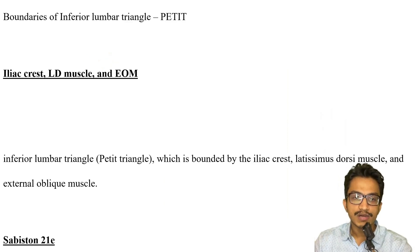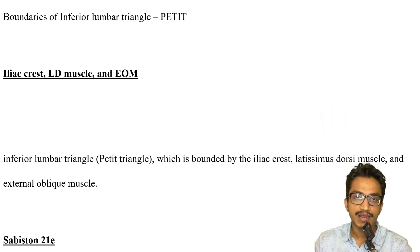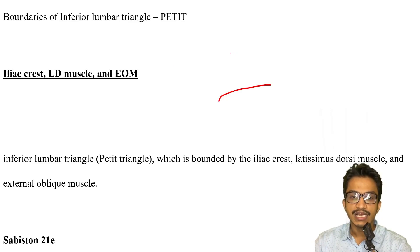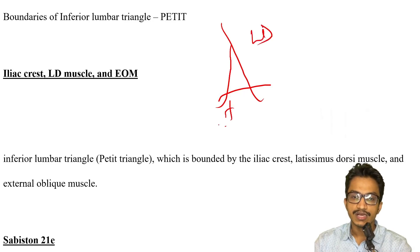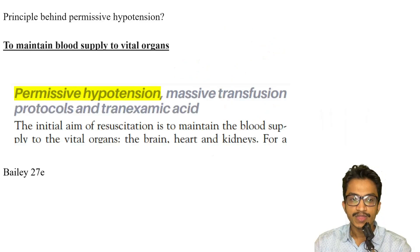The lumbar triangle — superior and inferior — are important. For the inferior triangle of Petite, if asked which are the components: it is bounded by the iliac crest, the external oblique muscle, and the latissimus dorsi muscle. These three form the parts of the inferior lumbar triangle of Petite.